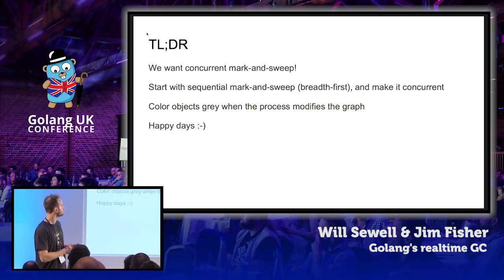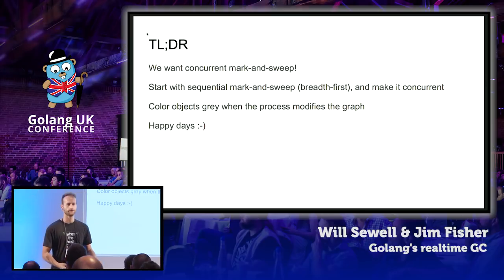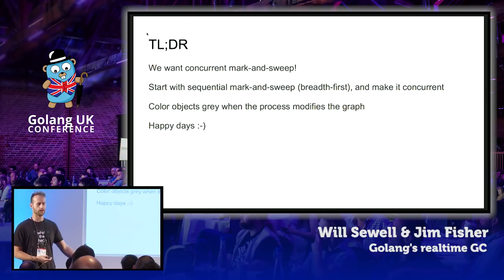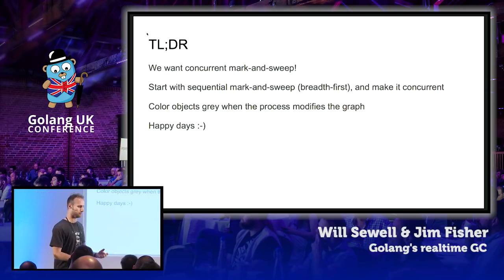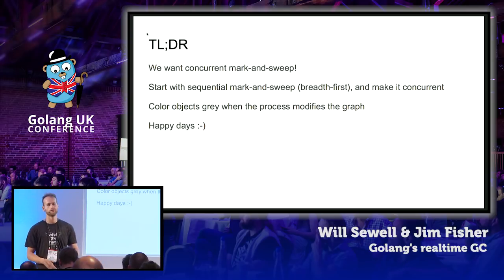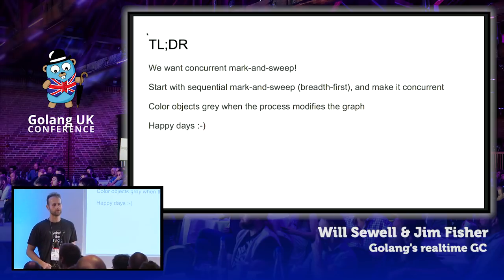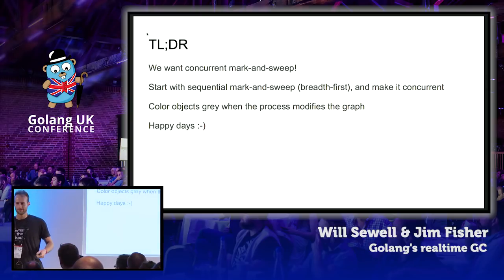What will happen is that those objects will get collected in the next cycle of your GC. The guarantee that this algorithm makes is that all objects will be collected within two garbage collection runs of the time that they become garbage. In terms of the theory, that's pretty much it. The approach that Go takes is to run classic mark-and-sweep concurrently with your program, maintaining that invariant. In theory, this means you can forget about the GC — your program is running all the time with no pauses. I'll now hand over to Will, who will talk about Go's garbage collector in practice.